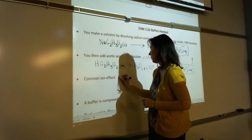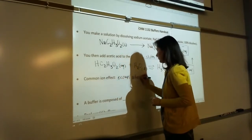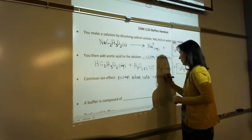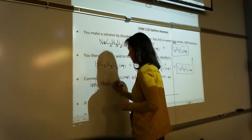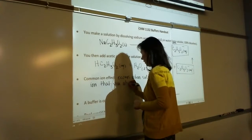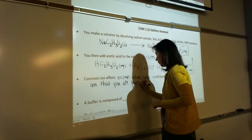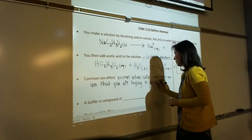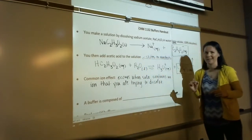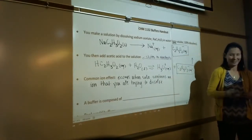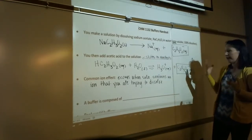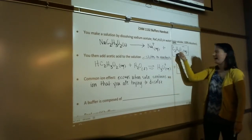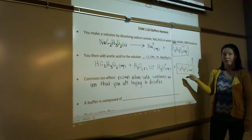The common ion effect occurs when the solution contains an ion that you are trying to dissolve. We'll see this next week when we do solubility products. Next week when we do solubility product, we're going to look at solubility and how well things dissolve. And if the solution contains an ion that you're trying to dissolve more of, that ion's not going to dissolve, because think back to Le Chatelier's principle — if you increase the concentration of a product, equilibrium goes away from it.